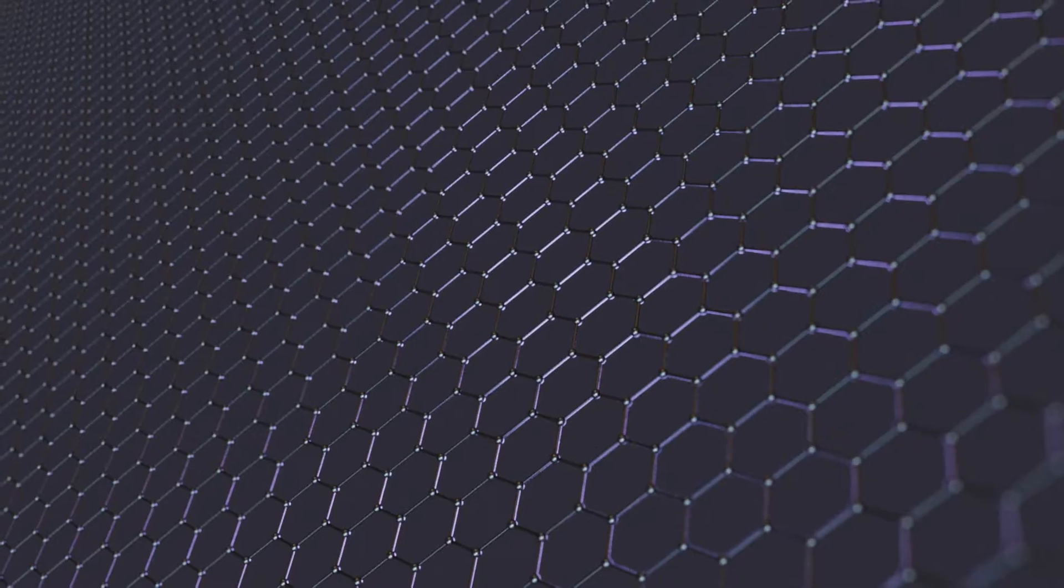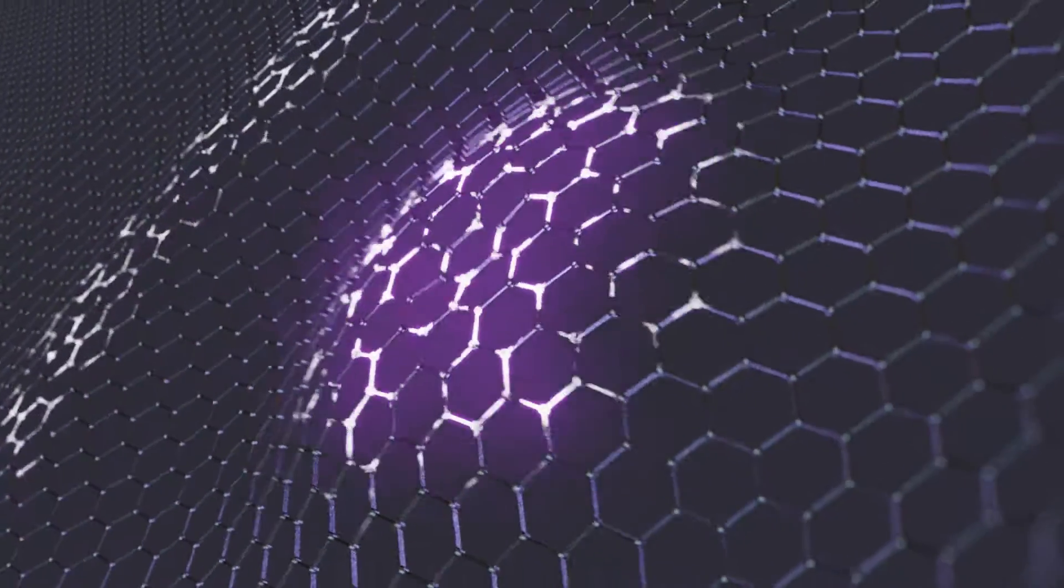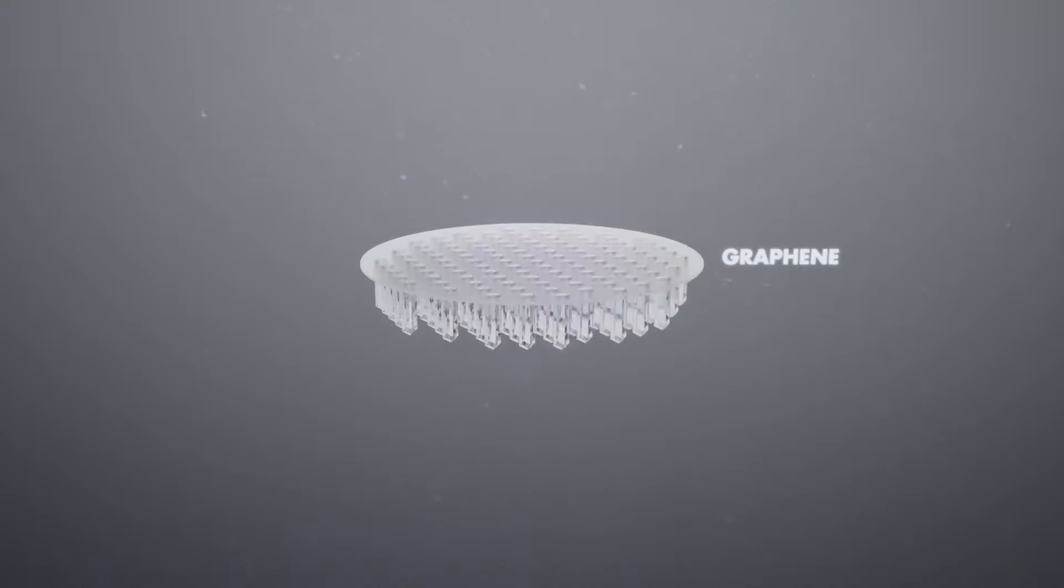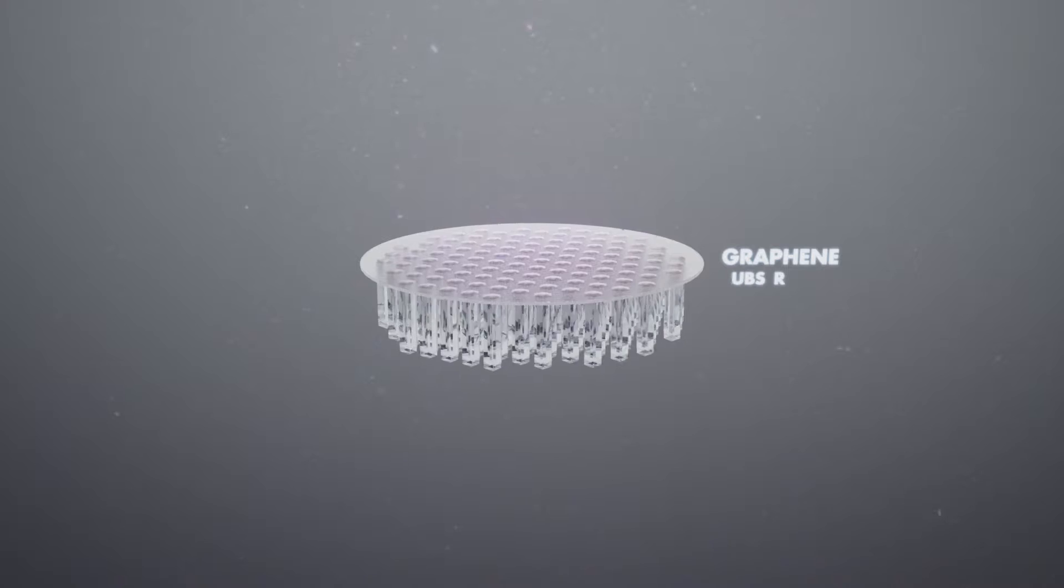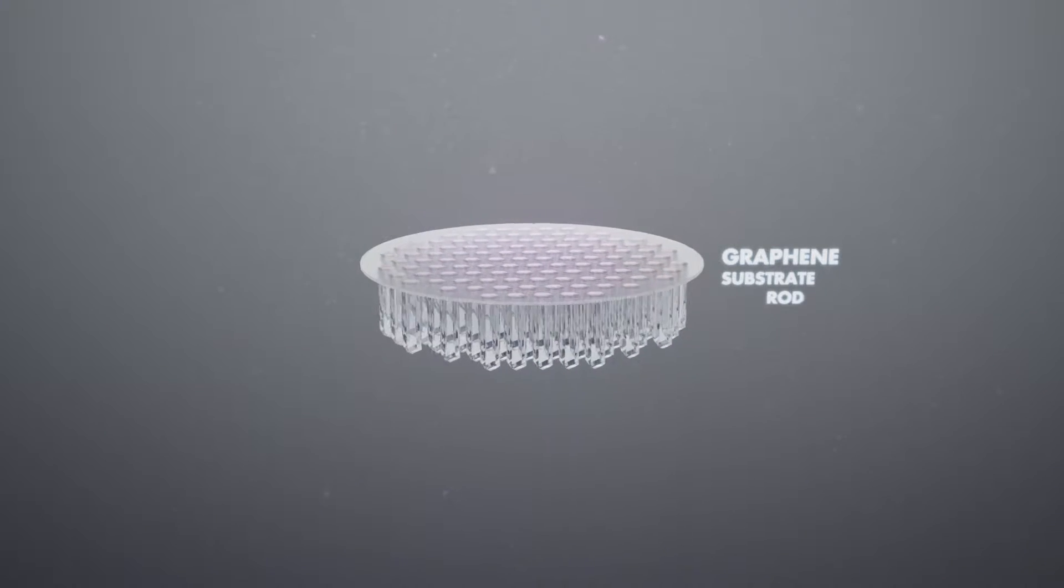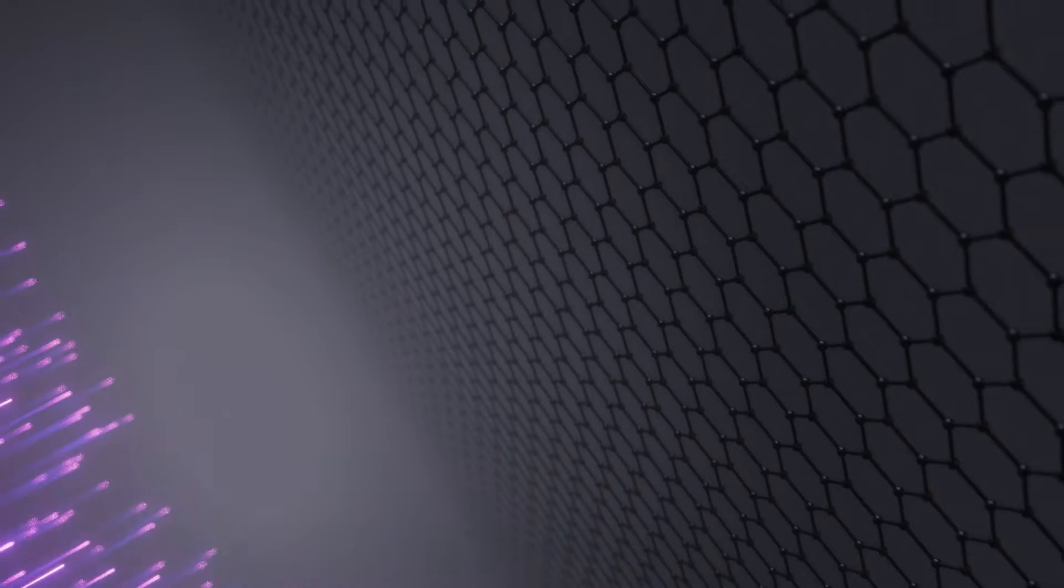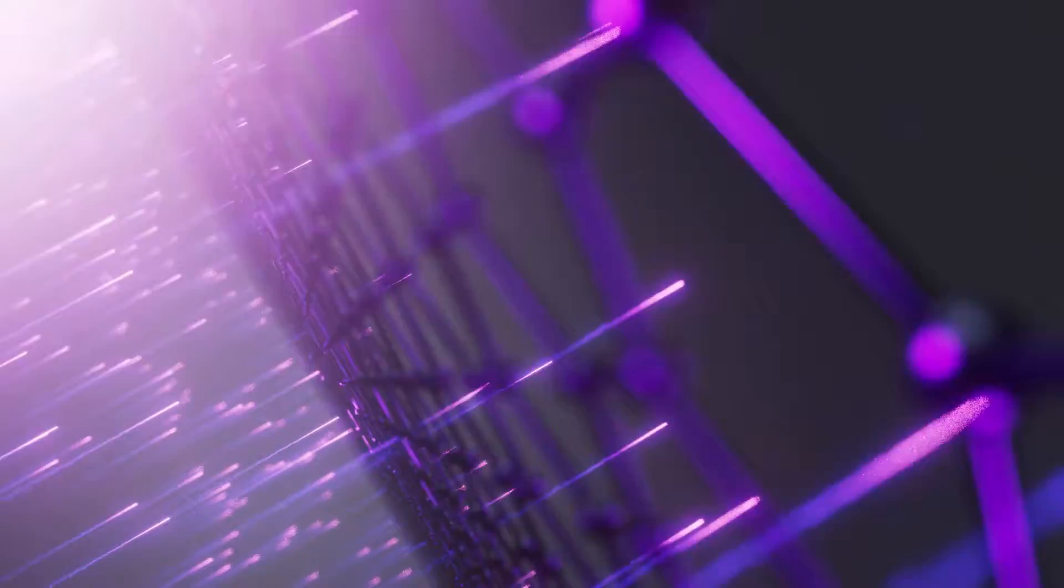Instead, we use graphene. Graphene is transparent to all wavelengths, and by using it as both the substrate and electrode, we create a thin and elegant design that lets the UV light through.